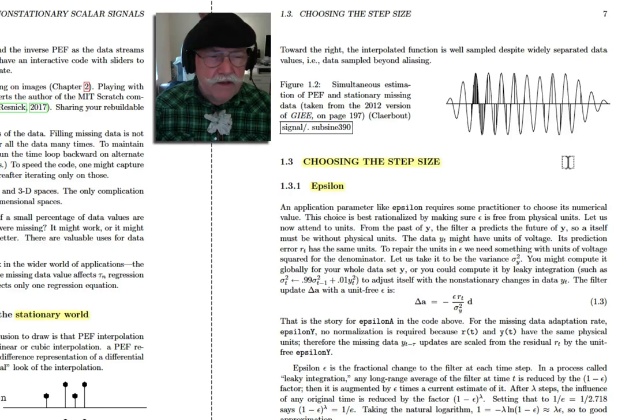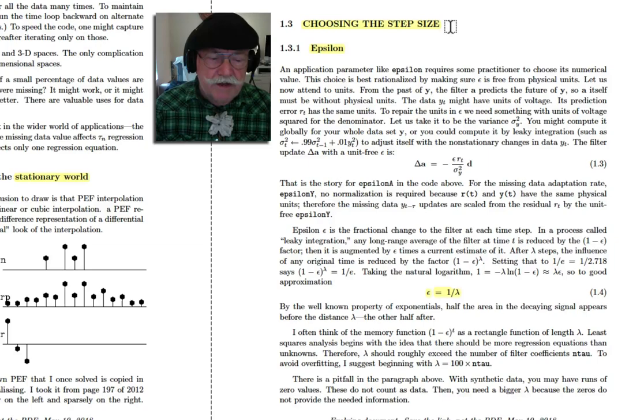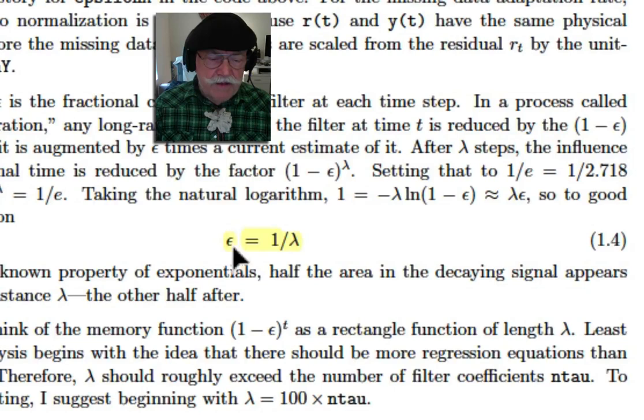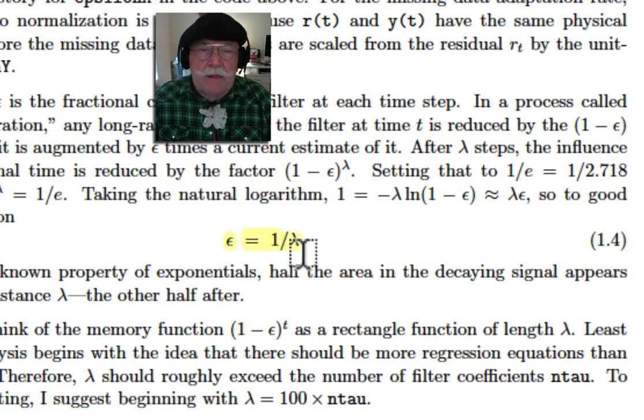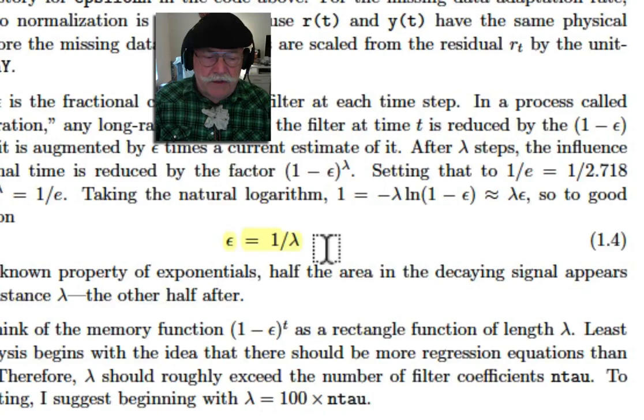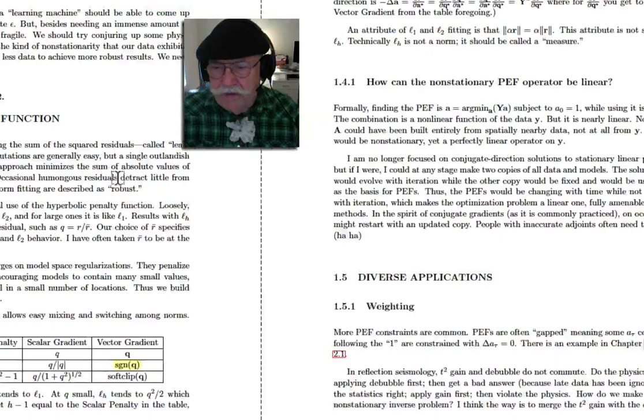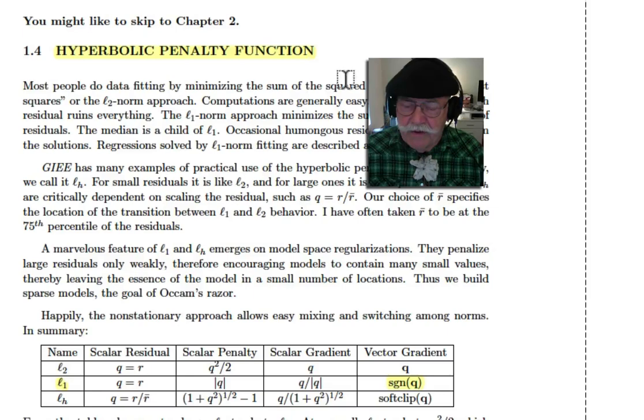You were not going to get nice interpolations like this out of linear interpolation or cubic interpolation or sinc interpolation. Here's another one which shows that we can interpolate beyond aliasing. Now, I don't have much time today. I don't want to dwell on choosing the step size, but I do want to tell you one important thing, how to choose the epsilon. The epsilon is really the inverse of a length. And what's that length? What's the meaning of that length? Well, how big a region would you consider to be, should be stationary within a region of a certain size? Well, that's lambda, and the size of that is given in pixels. If lambda is 200, then epsilon is a half a percent.